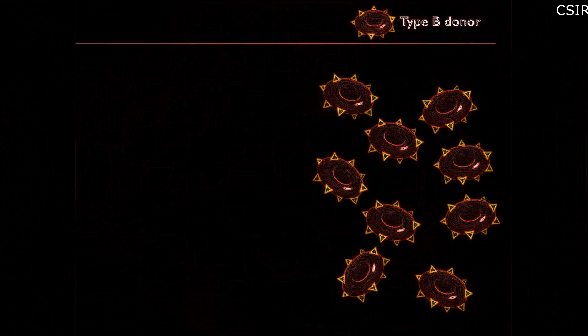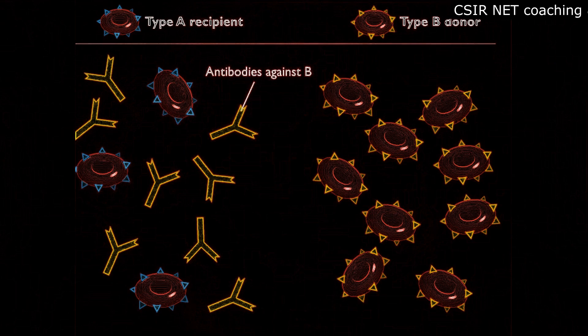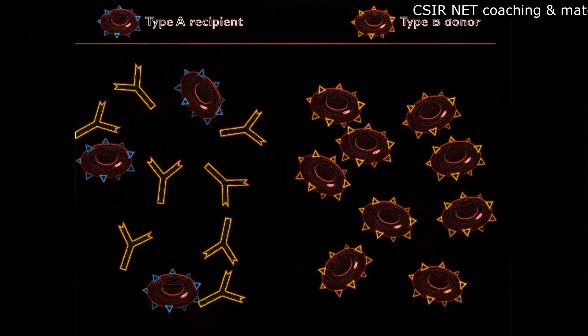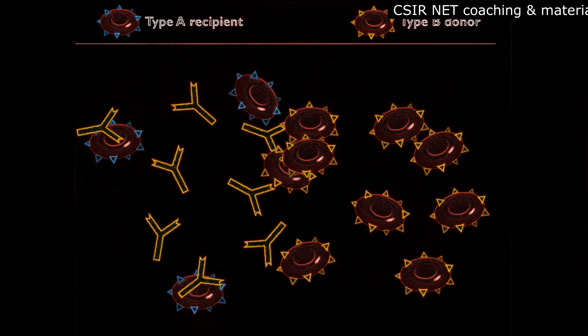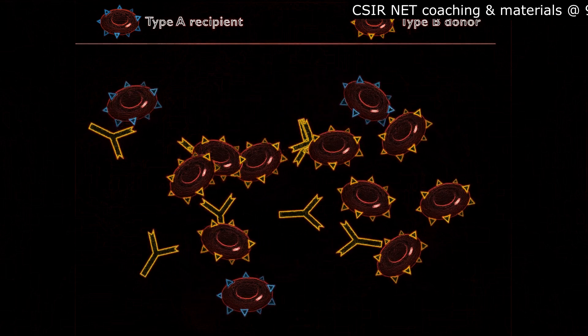If blood from a person who is type B is transferred to a person who is type A, antibodies present in the type A blood react to the surface antigens on the incoming red blood cells.